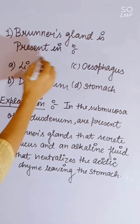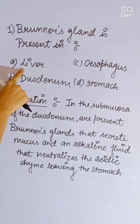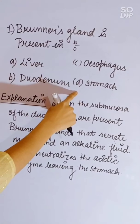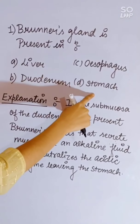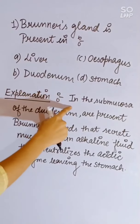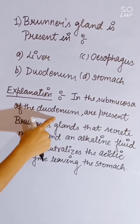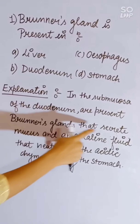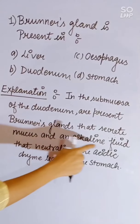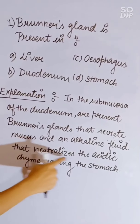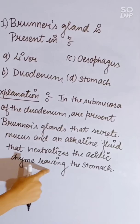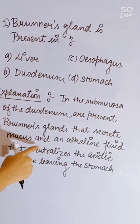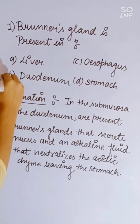Brunner's glands are present in: liver, duodenum, esophagus, or stomach. In the submucosa of the duodenum, Brunner's glands secrete mucus and an alkaline fluid that neutralizes the acidic chyme leaving the stomach. Correct answer is duodenum.